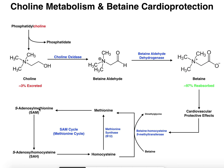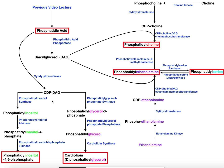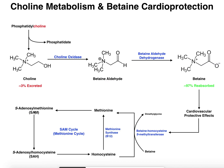If we have methionine, it can be converted to S-adenosylmethionine. Then, in various methyltransferase reactions — including the reaction that actually generates choline, which we saw in a previous video on phosphatidylethanolamine methyltransferase — S-adenosylmethionine loses its methyl group and becomes S-adenosylhomocysteine, or SAH. The S-adenosylhomocysteine then goes back to homocysteine through another enzyme.